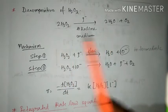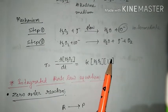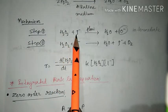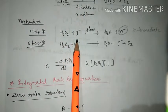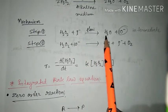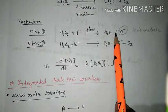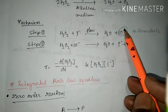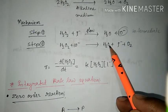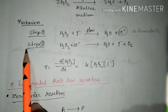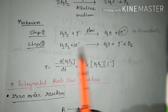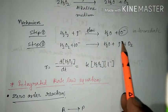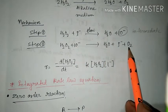Let us take the mechanism of this reaction. In the first step, hydrogen peroxide reacts with the I- ion — this is the slow step — and produces H2O plus OI-. This OI- negative is formed in between the two steps. In the second step, hydrogen peroxide reacts with OI- and produces water, I-, and oxygen molecule.